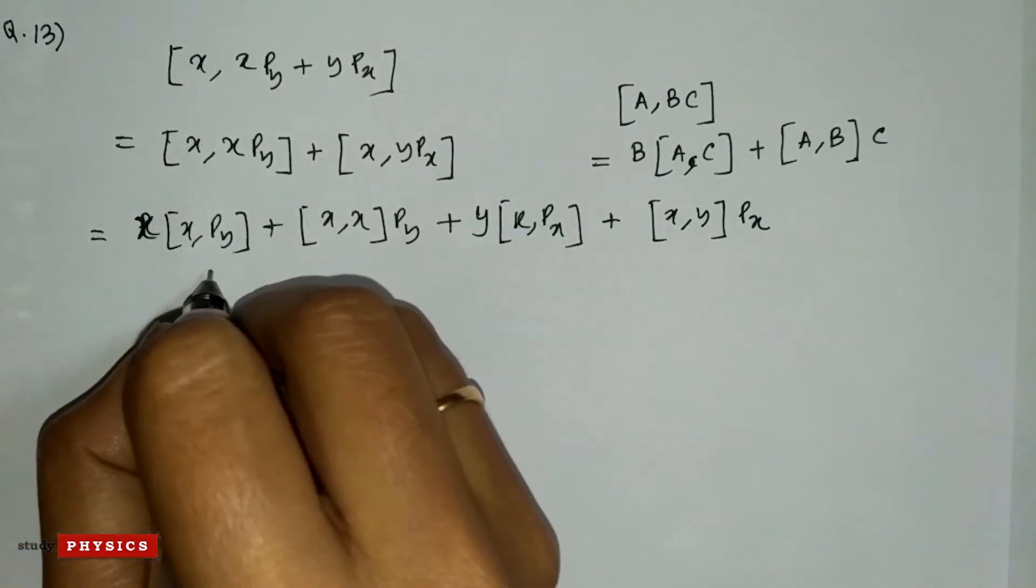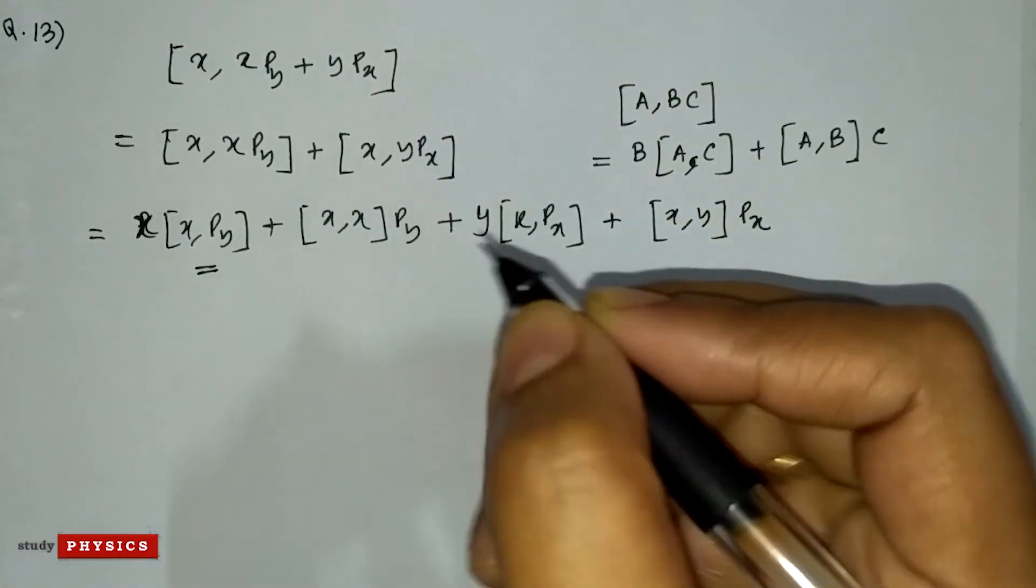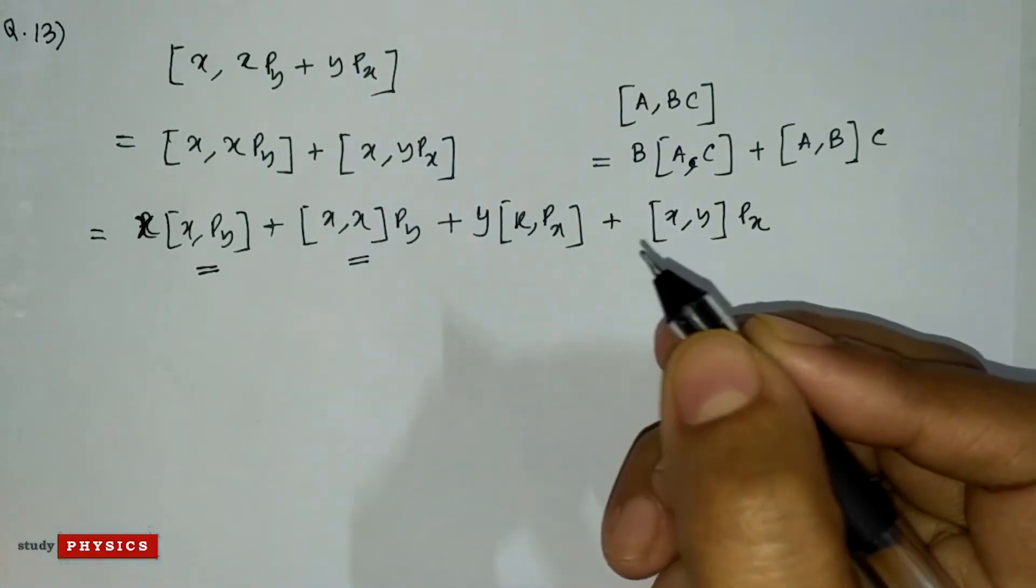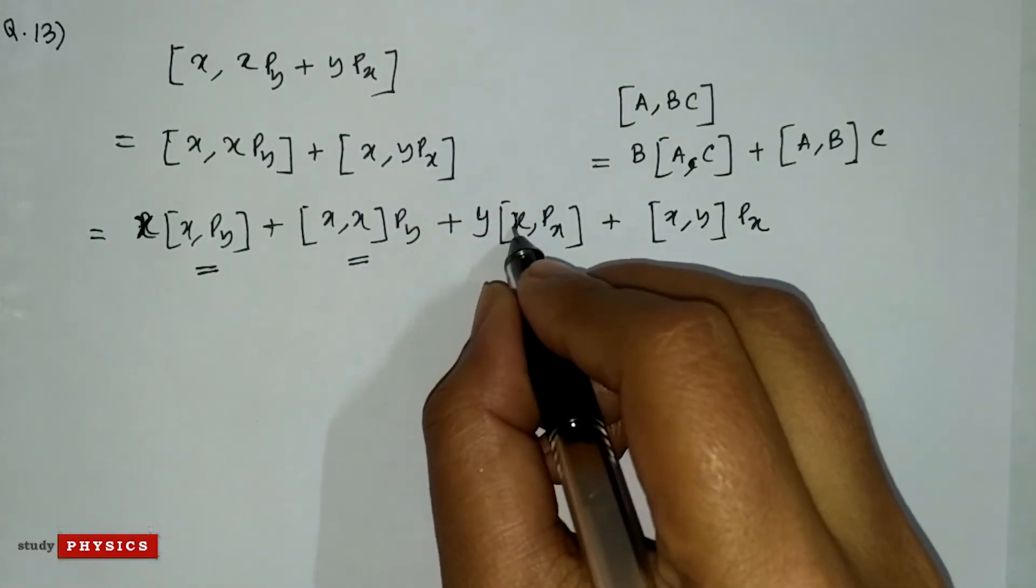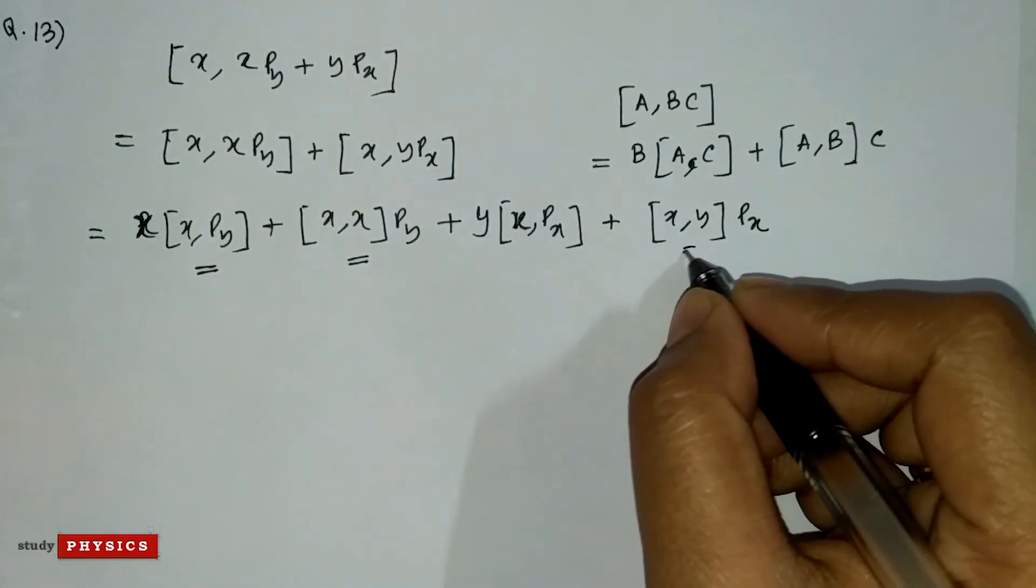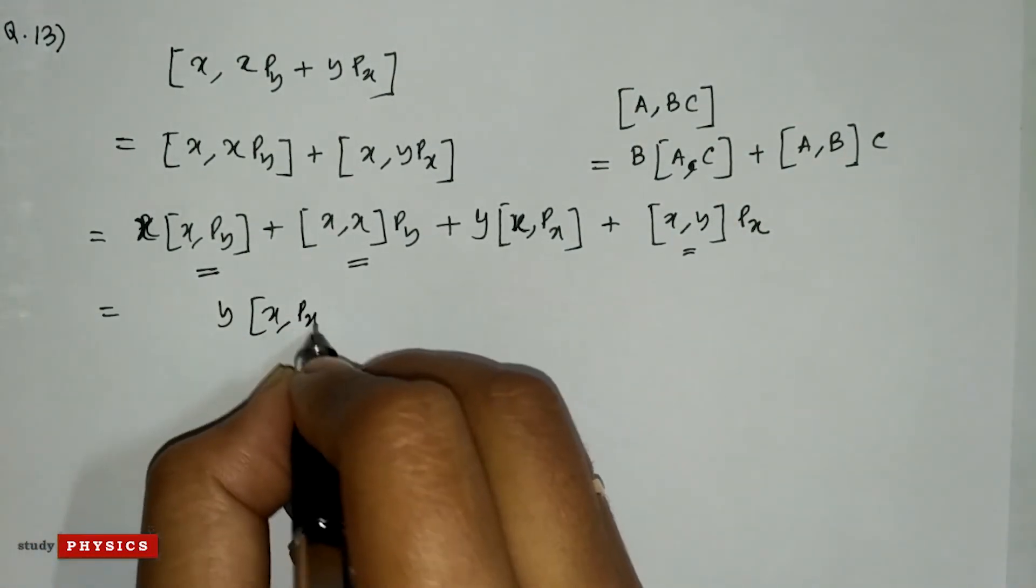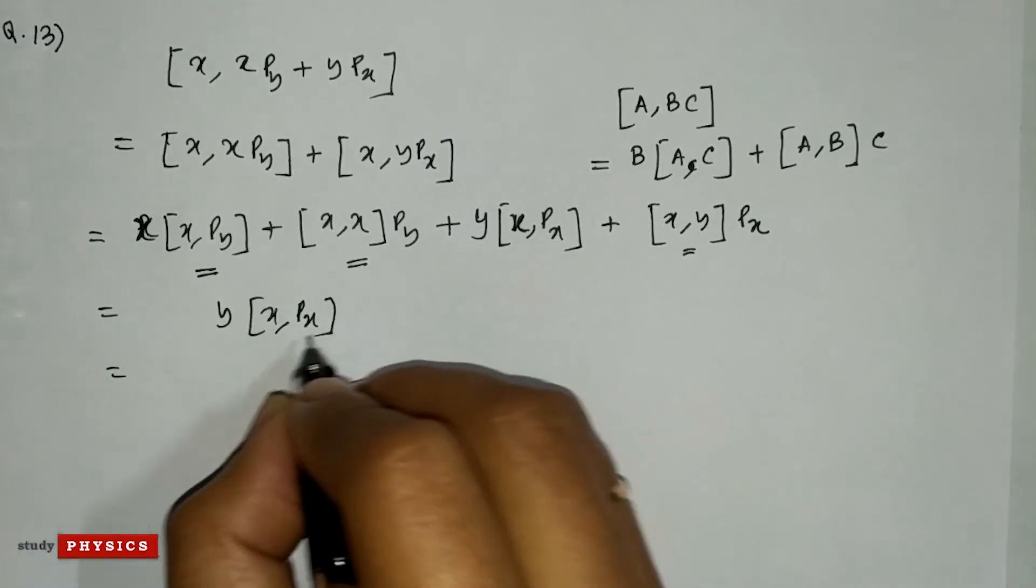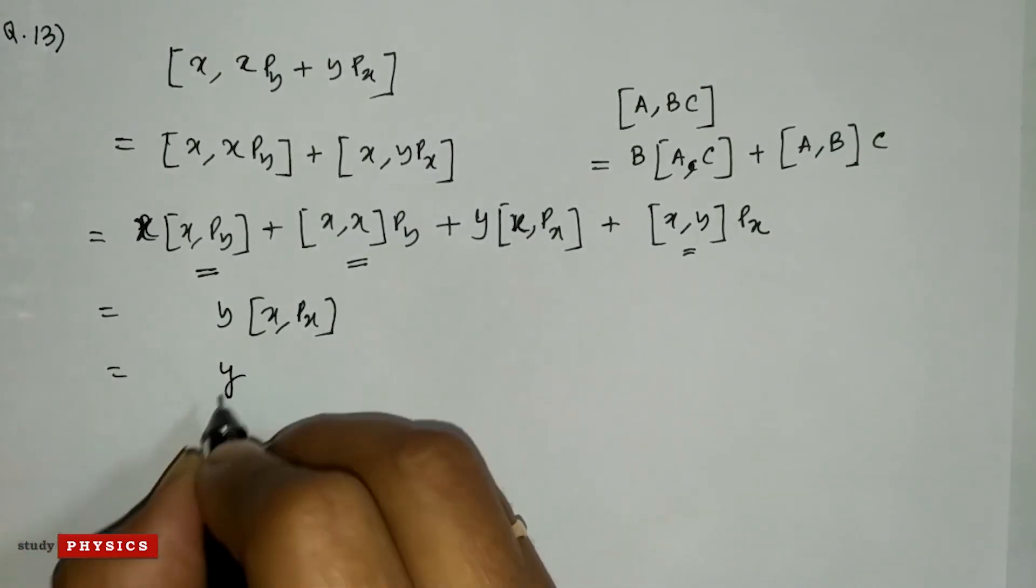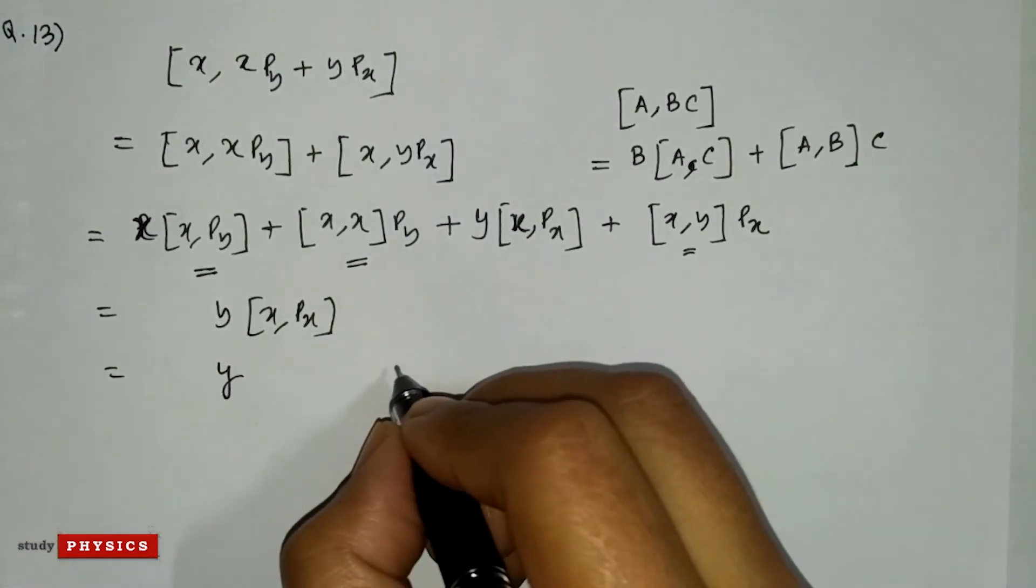We know that x[x, p_y] is 0, [x, x]p_y is also 0, and [x, y]p_x is also 0. This term y[x, p_x] gives you 1, since [x, p_x] equals 1. So this is y, and the answer is B.